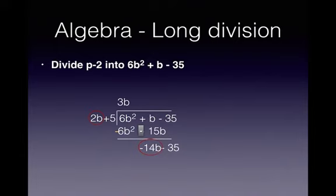Okay, the leftmost term and the leftmost term. 2b divided into minus 14b minus 7 times. And now we multiply back by the minus 7 against the 2b and 5. Change the sign on the bottom line and add. And we get 0. And our answer there to the question is 3b minus 7.